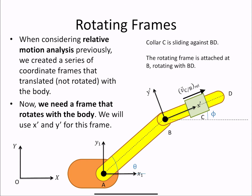What we can see in this system is a collar C that's sliding against the body BD. We've got a rotating frame x prime y prime that's attached at B and rotating with BD. This means that the collar is always moving in the x prime direction regardless of the angle of the arm with respect to the horizontal.